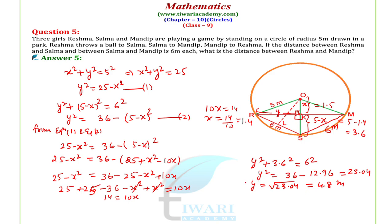तो Reshma और Mandeep के बीच की distance, RM = Y + Y = 2Y = 2 × 4.8 = 9.6 metres. So the distance between Reshma and Mandeep is 9.6 metres. Thank you for watching Tiwari Academy.